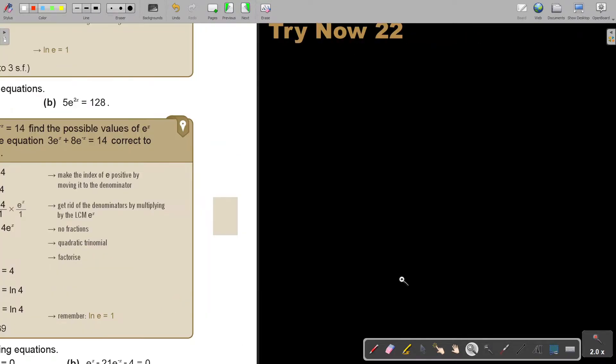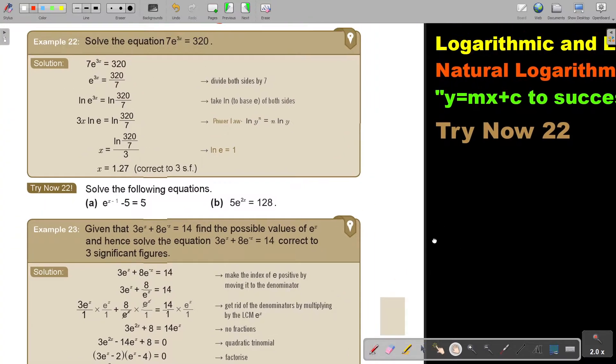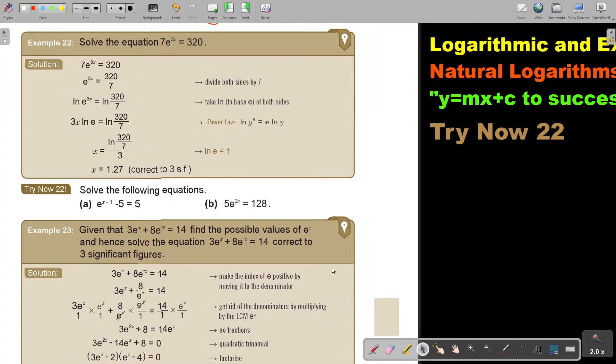Let's look at another example. I'm just going to make it a little bit bigger. There it is. Solve the equation 7e to the power of 3x equals 300.